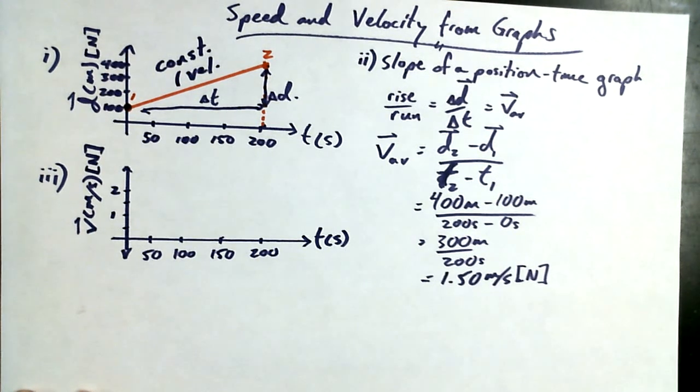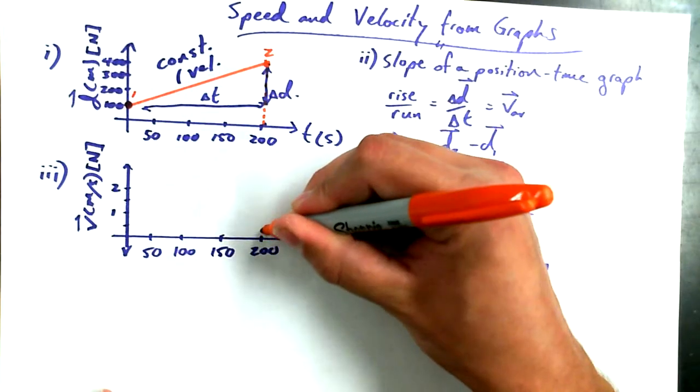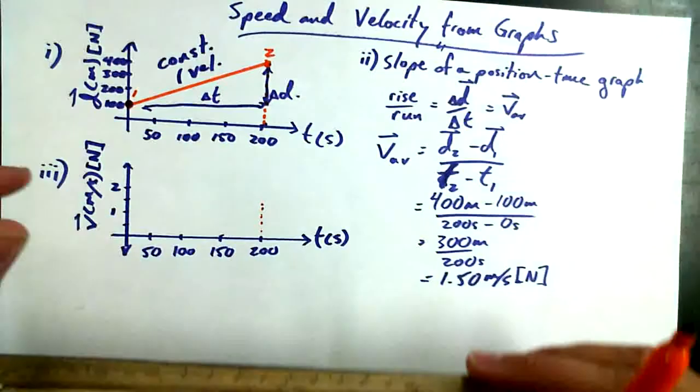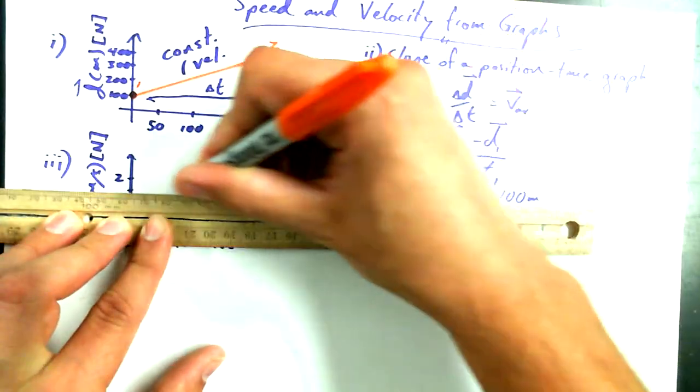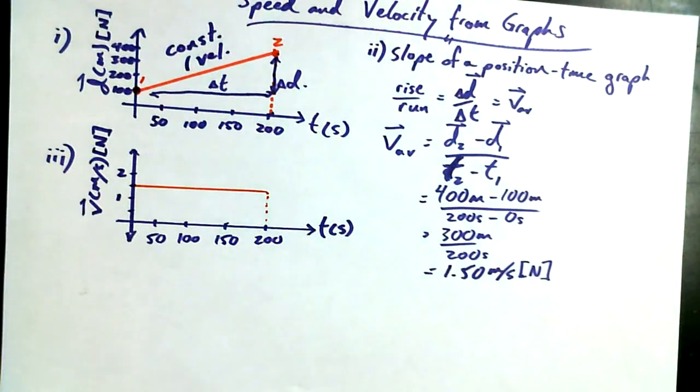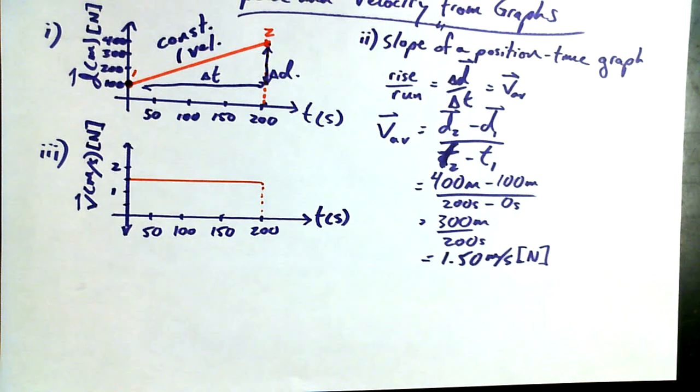So what is the constant velocity for this second graph for the whole first 200 seconds? What's the numerical value? 1.5 meters per second. The whole darn thing. 1.5 meters per second. I'm going to draw my little dotted line up. But the whole darn thing, 1.5 meters per second the whole time. Simplest little graph you could ever imagine. 1.5 meters per second for 200 seconds.